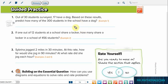This is a simple rate problem. Let's try to use equivalent fractions to solve it. Out of 30 surveyed, 17 have a dog. So 17 over 30 means how many over 300? So from 30 to 300, we multiplied by 10.